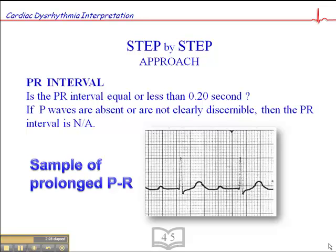Then we look at the PR interval. We want to know: is it normal or delayed? If it's normal, we know the impulse is traveling from the SA node through the AV node down the bundle of His at a normal pace, with nothing interfering with conduction. If it's greater than 0.20 second, there's some delay at the AV node or perinodal tissue. In this example of a prolonged PR interval, you can see it is greater than five small squares — greater than 0.20 second — which would be an example of a first-degree AV block.